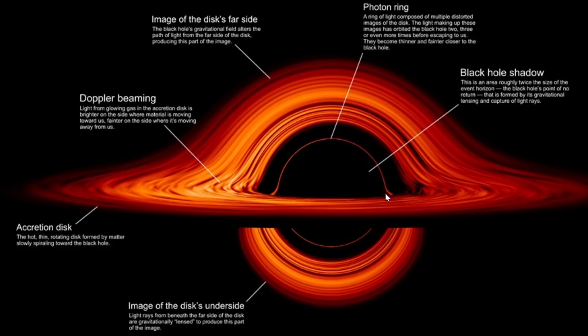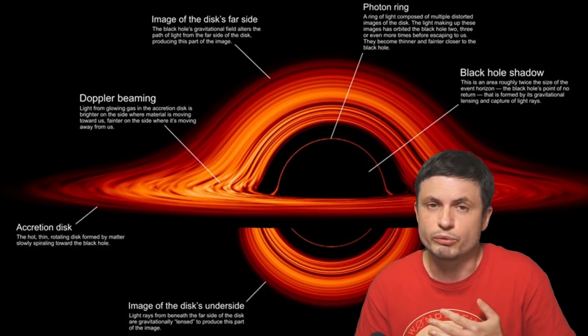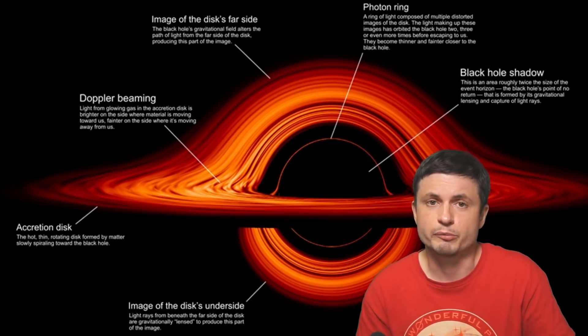But then right here you can also see this ring known as the photon ring. And this is a really interesting and extremely tiny region around the black hole that technically reflects the entire universe back to us.